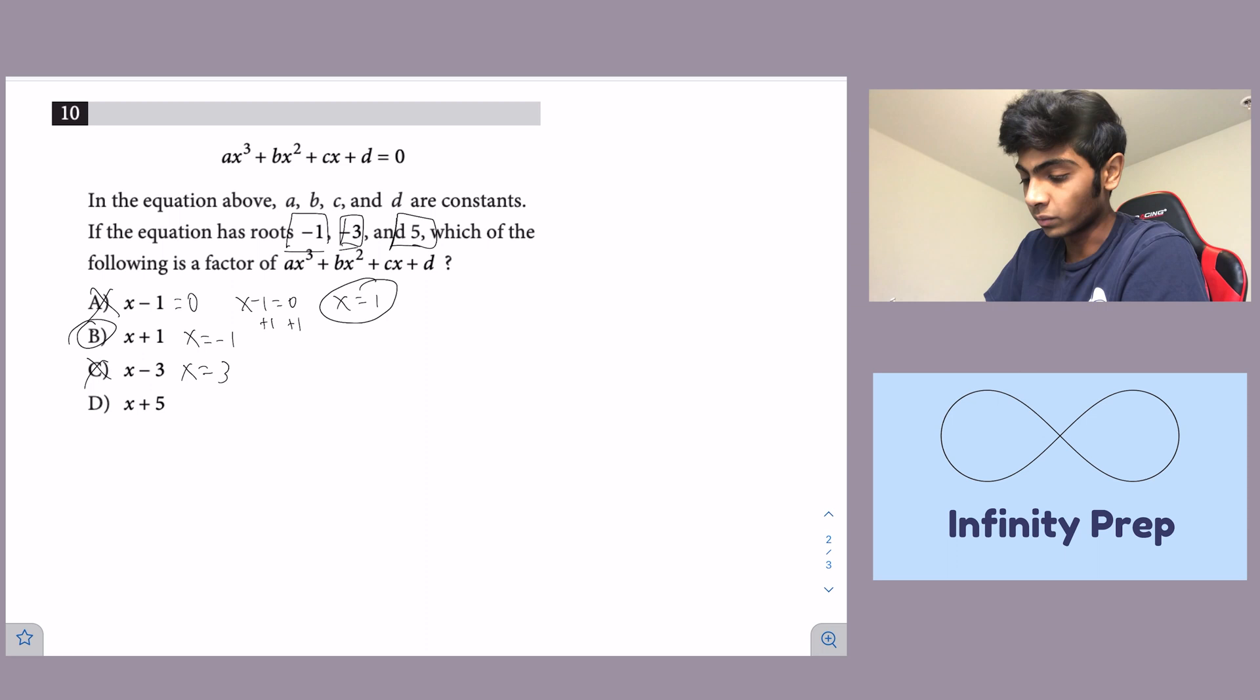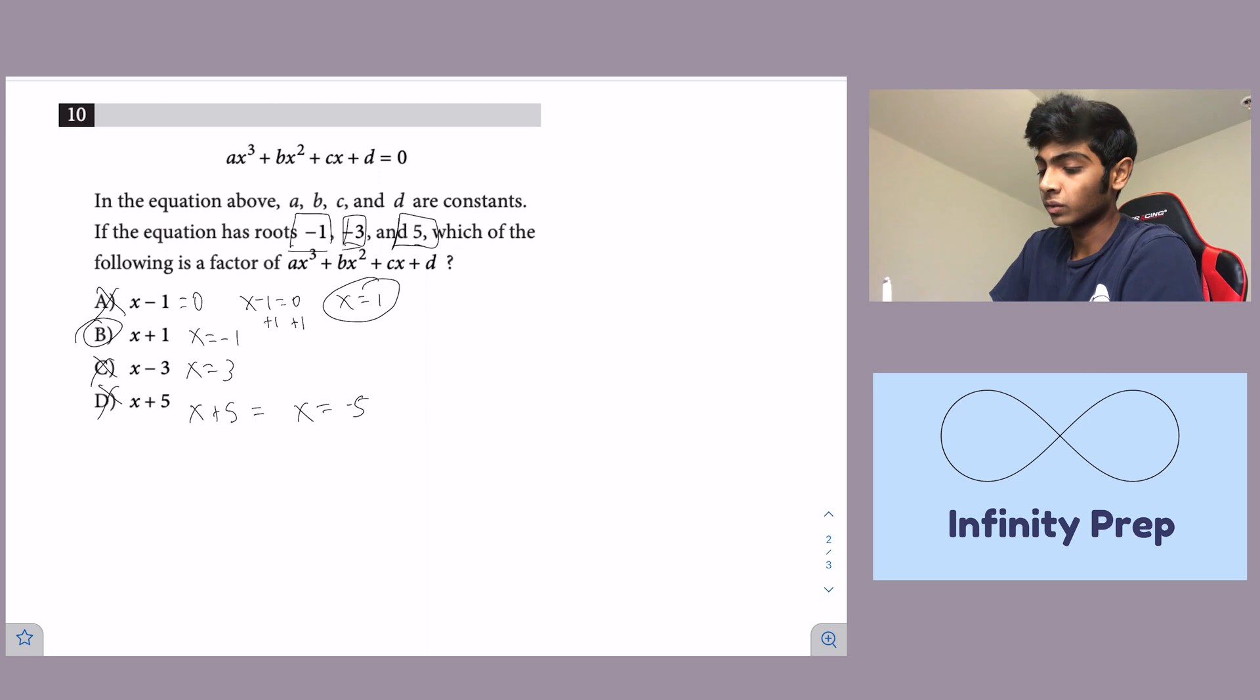And we'll go to this one, x minus 3, x is equal to 3 after we solve, which is not a root. And x plus 5 is going to be equal to x equals negative 5, which again is not a root. So we know that B is going to be your answer and that's all we have to do to solve this one.